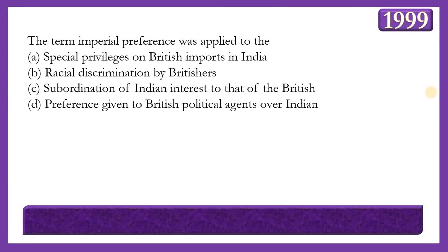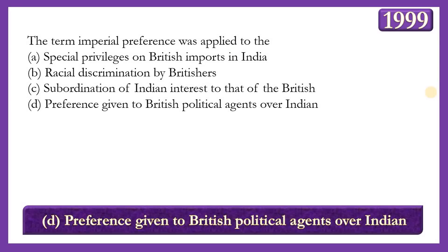Next question: The term 'Imperial Preference' was applied to which of the following? Options: special privilege on British imports in India; racial discrimination by Britishers; subordination of Indian interests to British interests; or preference given to British political agents over Indians. The answer is option D — the preference given to British political agents over Indians — as imperial preference historically was a commercial arrangement in which preferential tariffs were granted among constituent units of an empire.